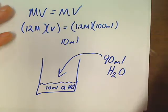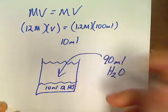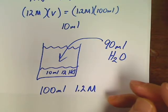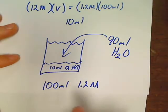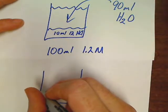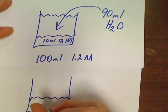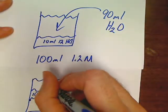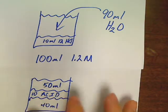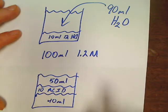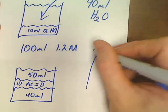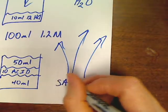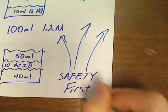Just for reference, in the lab you never pour water straight into strong acid. You need to add some water first — for example, add 40 mL of water, then add the 10 mL of acid, then finish adding the other 50 mL of water. As soon as water hits the acid, the water will boil and blow the mixture right back up in your face. Always remember: safety first.